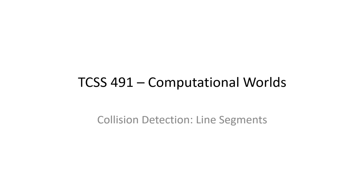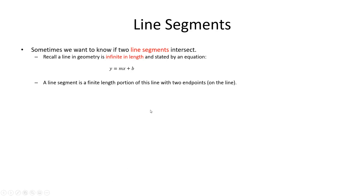Welcome. In this video I want to continue talking about collision detection. We did a little bit of collision detection already with bounding circles and bounding boxes, and now I want to focus specifically on line segments. If we want to extend beyond bounding circles or bounding boxes into more arbitrary shapes like arbitrary polygons, we tend to end up relying a lot on collision detection between line segments and seeing if line segments collide with one another.